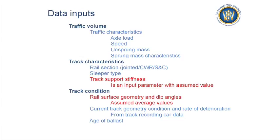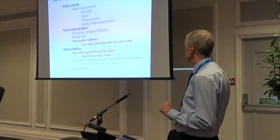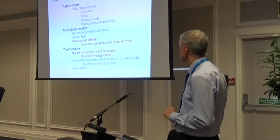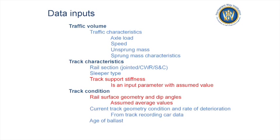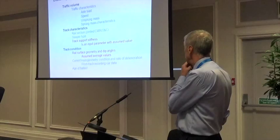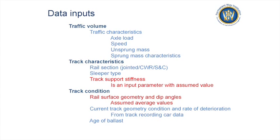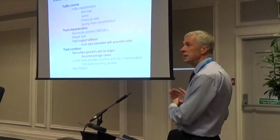Some of the inputs we need: we classify the traffic volume and its characteristics — axle load, suspension characteristics, etc. We quantify the structural characteristics of the track: what section of rail, is it jointed, CWR, switching and crossing work, what sleeper type (timber, steel, concrete), what sleeper spacing, and what track support stiffness. Track support stiffness is highlighted because we basically don't know it. It's a vital ingredient to the calculation and yet for every individual piece of track we really don't have a clue what its stiffness is, and yet it's an important parameter.